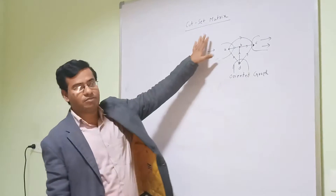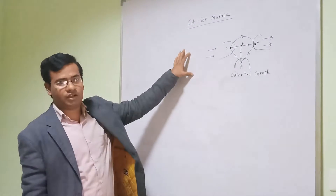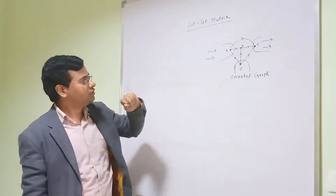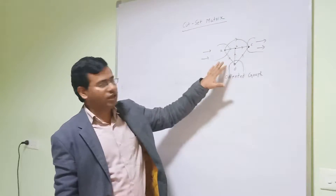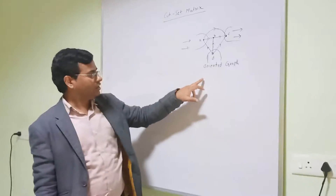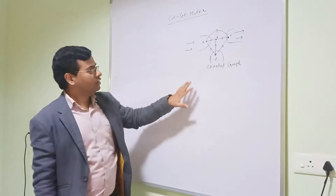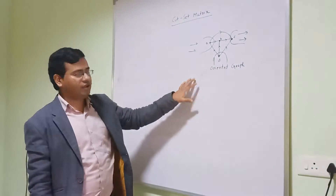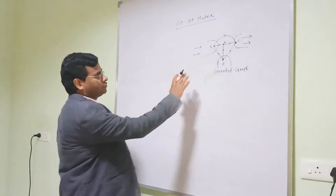I have discussed the cut-set matrix. This is a part of graph theory. So this is a particular graph, and this graph is known as an oriented graph. In this graph I have found out the cut-set matrix.